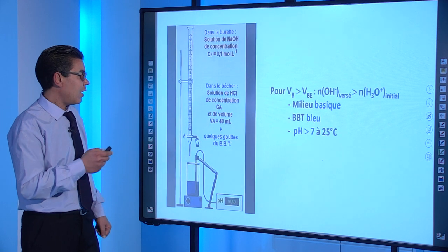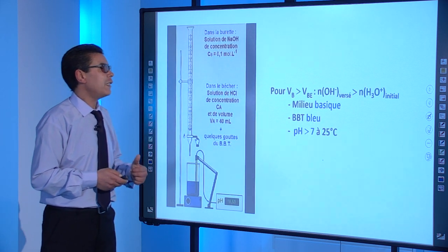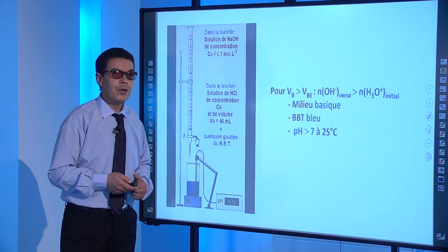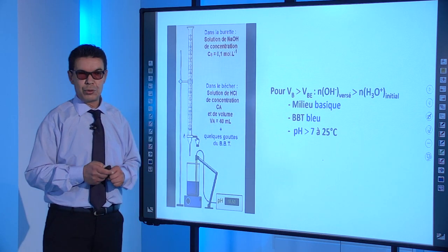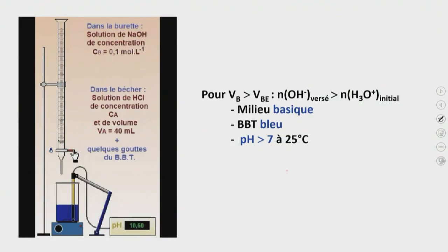Troisième état : lorsque le volume de base versé est supérieur au volume de base ajouté à l'équivalence, le nombre de moles de OH⁻ versé est supérieur au nombre de moles de H₃O⁺ initial. Le milieu est donc basique, le mélange est de couleur bleue et le pH est supérieur à 7, évidemment à 25°C.